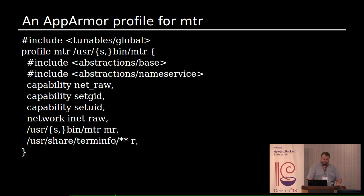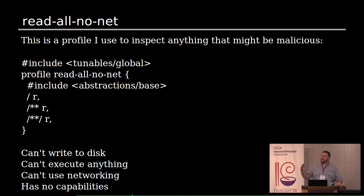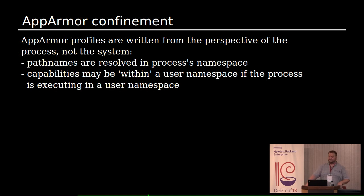Here's another profile I use practically every week. It's extremely small: it allows reading everything on the operating system but doesn't allow writing anything and doesn't allow any network access. I use this on the security team to inspect zip files — people send us zip files full of crazy stuff all the time. I also use it with objdump: it can read whatever I feed to a program, but can't write anything, can't get data off the network, can't do any privileged operations.